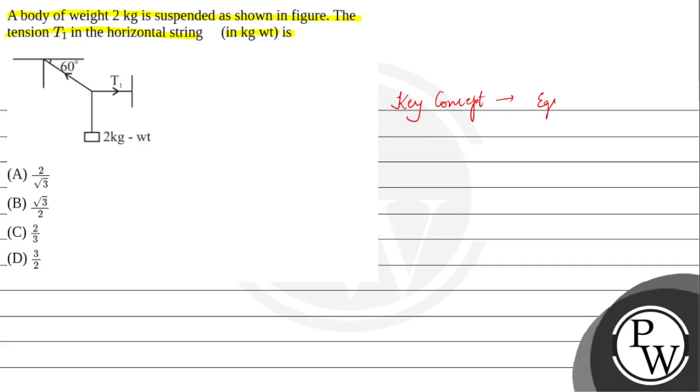This question's key concept is equilibrium of a particle. When the sum of all the external forces acting on a particle cancel out, the particle is in equilibrium. We can say that the vector sum of all the external forces when it is equal to zero, the particle is set to be in equilibrium.